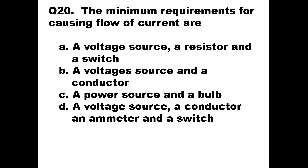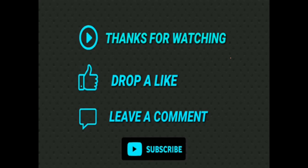Question 20: The minimum requirements for causing flow of current are — ? To have current flow in a minimum circuit, you need a voltage source and a conductor. The voltage source is applied and the current flows through the conductor. So Option B — a voltage source and a conductor — is the right answer. These were the first 20 questions on BEEC subject. In my next video I will take the other questions. Thank you very much.